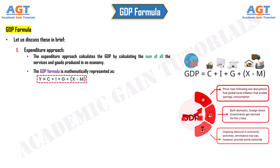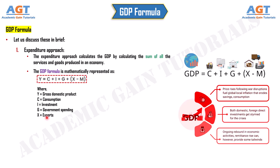Where: Y represents gross domestic product, C represents consumption, I represents investment, G represents government spending, X represents exports, and M represents imports.